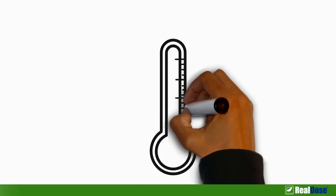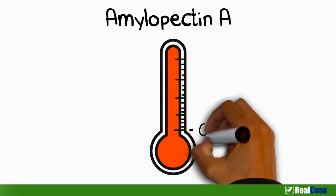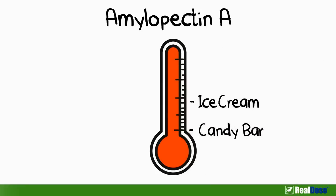The reason is because wheat carbohydrates, called amylopectin A, cause a larger spike in blood sugar than almost any other food. That's higher than a candy bar, ice cream, or pure table sugar.